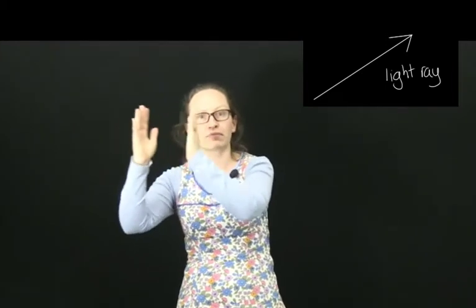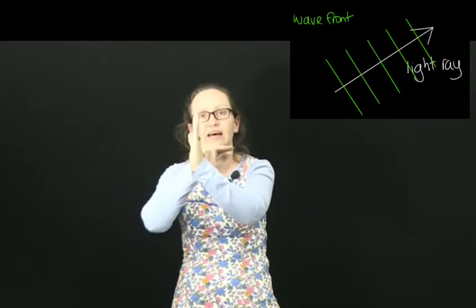So in order to do this, we're going to be representing light as rays. So rays are small arrows like this, which show the direction the light is travelling in. So the actual wave fronts making up the light are perpendicular to the ray.